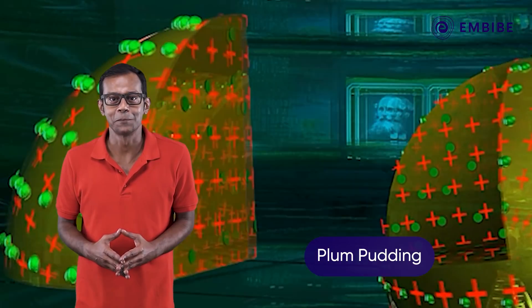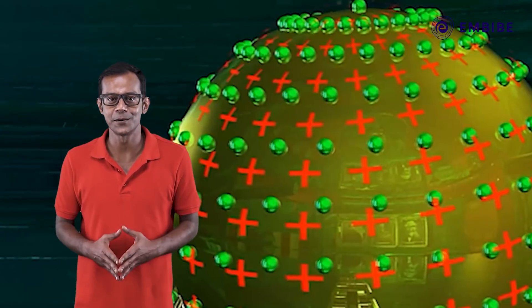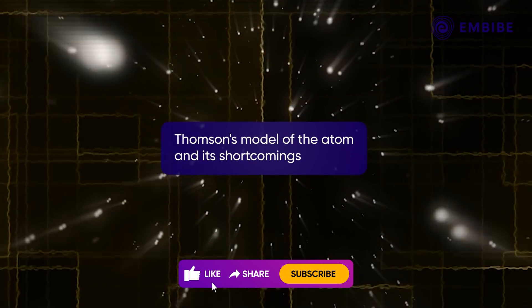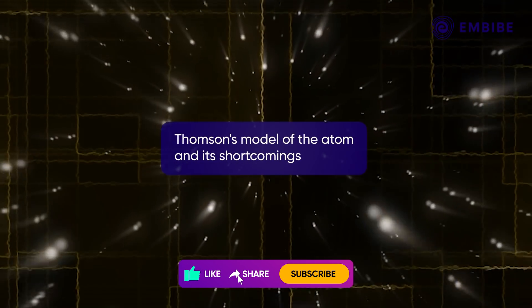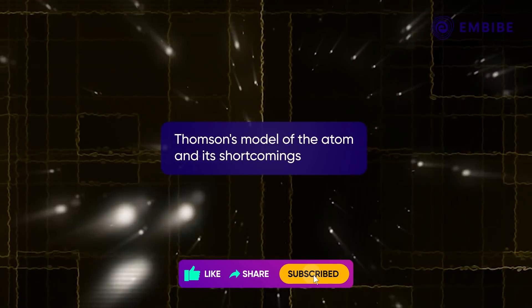Therefore, he proposed a model of the atom which he likened to a plum pudding. Let's take a look. Our objective is to describe Thompson's model of the atom and its shortcomings.